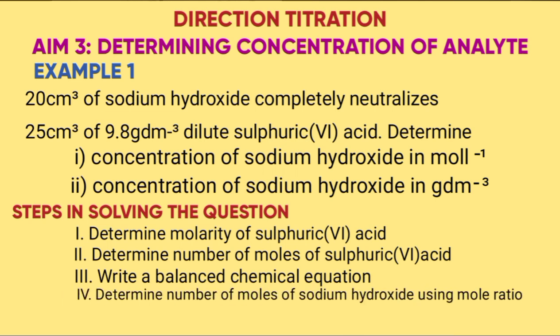Step 4: Determine the number of moles of sodium hydroxide, which is the analyte, from the mole ratio. Step 5, part i): Determine concentration of sodium hydroxide in moles per dm³, which is given by the number of moles in step 4 times 1000 over volume, which is 20. Concentration in grams per dm³ will be equal to concentration in mol per dm³ times molar mass.